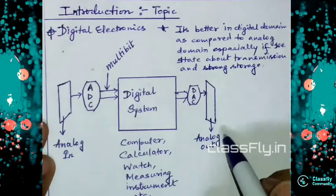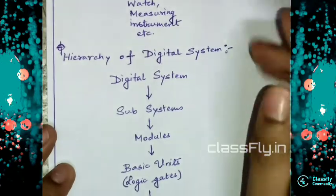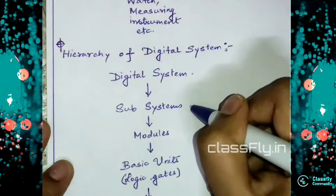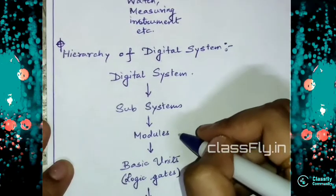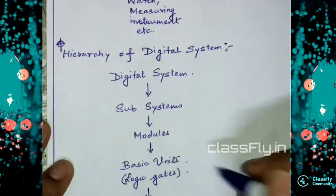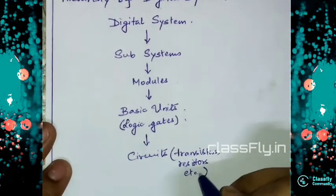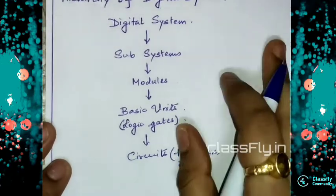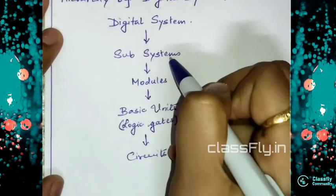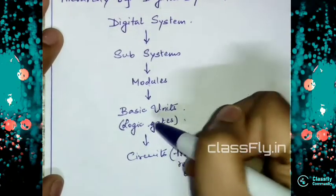Now we will see the hierarchy of the digital system: digital system, then subsystems, then modules, then basic units — which means logic gates — and then the circuits, which are transistors, registers, and so on. From digital systems to subsystems, from subsystems to modules, from modules to logic gates, and from logic gates to circuits — this is the hierarchy of the digital system.